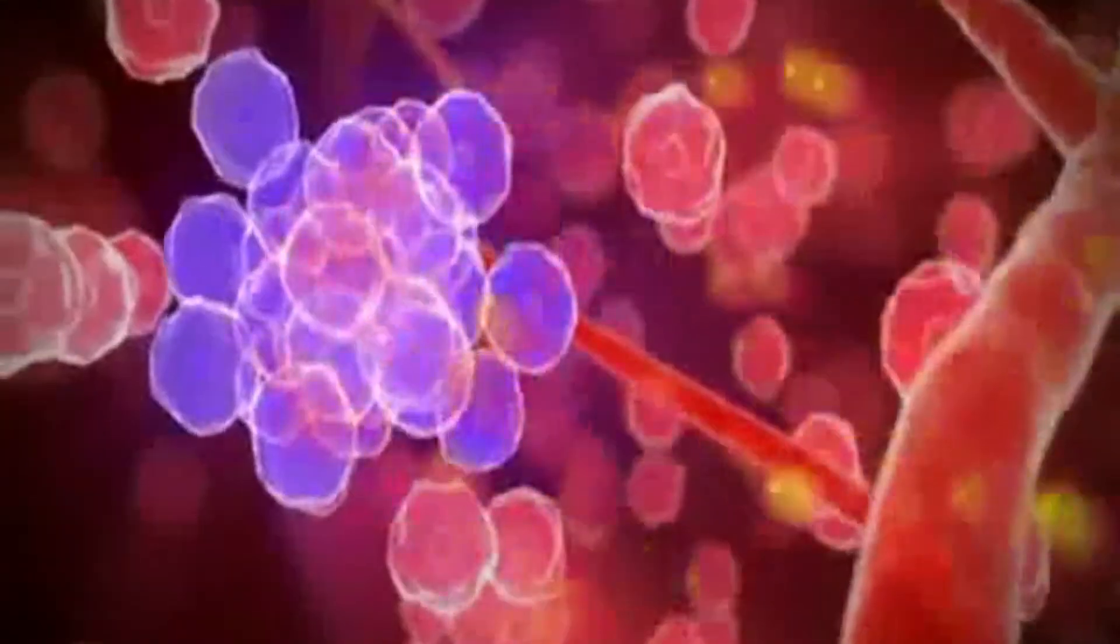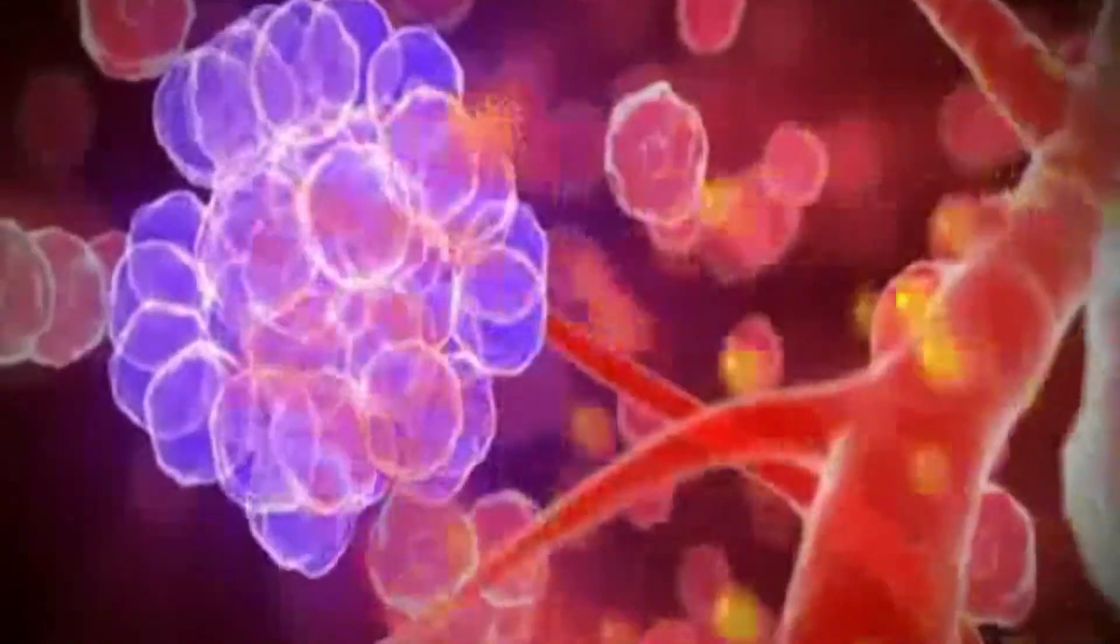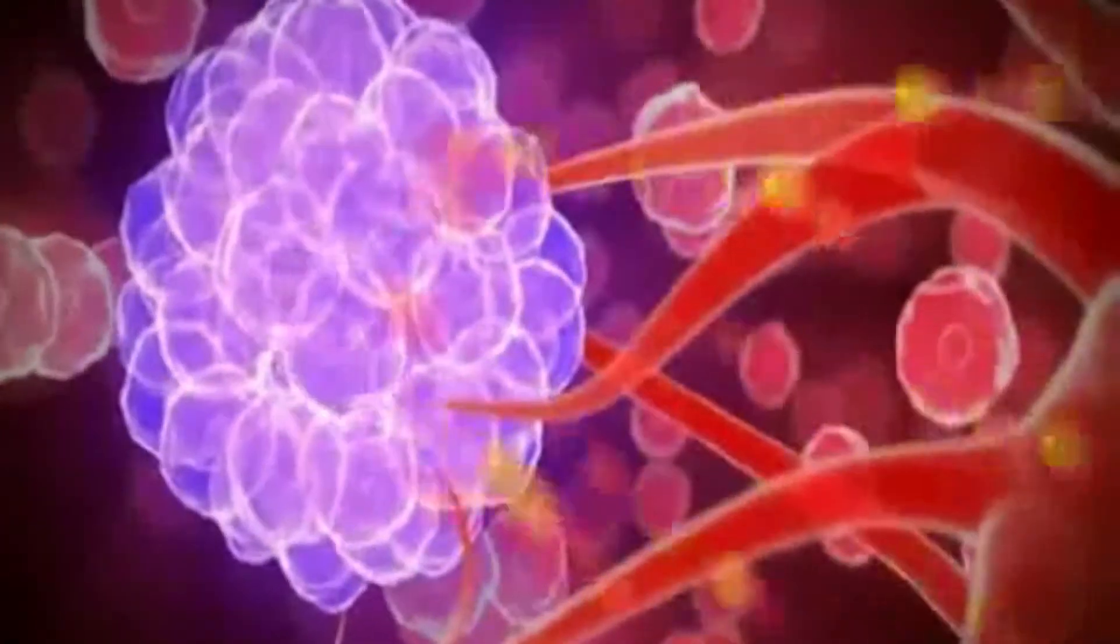As the tumor develops, it needs its own supply of nutrients to survive and grow and therefore develops its own vascular network by angiogenesis.